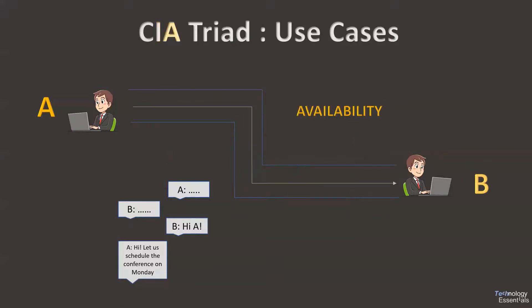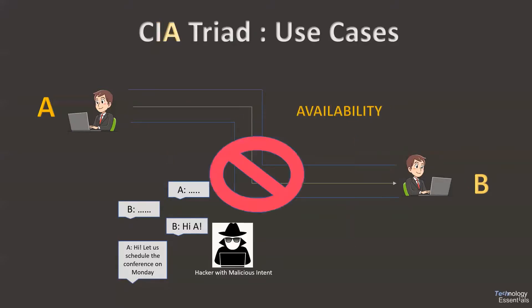In the third case, the hacker decides not to allow B from receiving the entire message. He hijacks the channel and diverts all the messages to himself, preventing their transmission on to B. Hence the availability of the message is lost.